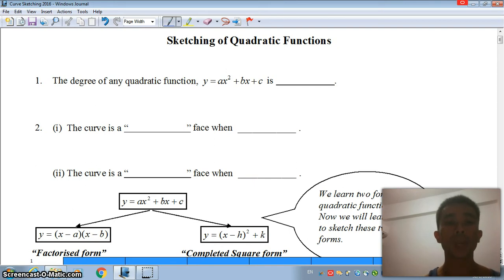The degree of any quadratic function of the form y equals ax squared plus bx plus c is 2. Why? We actually take a look at the highest power of this polynomial function itself. As you can see over here, it's of degree 2.